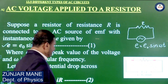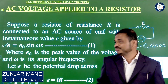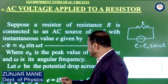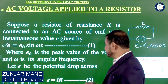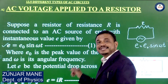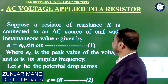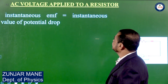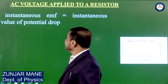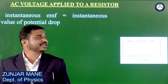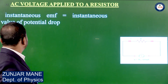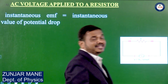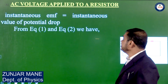By Ohm's law, E = I × R, where I is the current flowing through the resistance and R is the resistance of the resistor. The instantaneous value of the potential drop is equal to the instantaneous EMF.